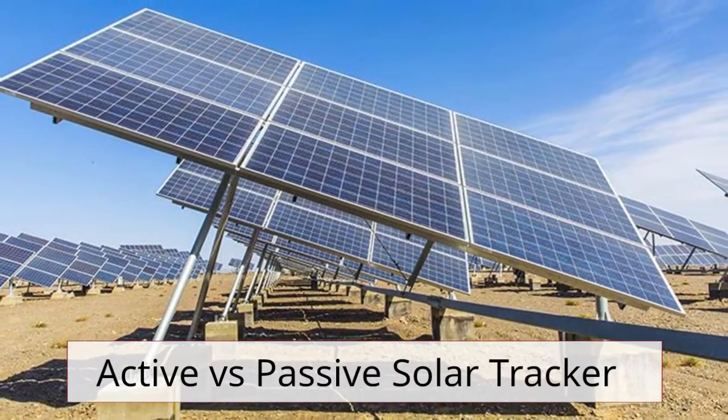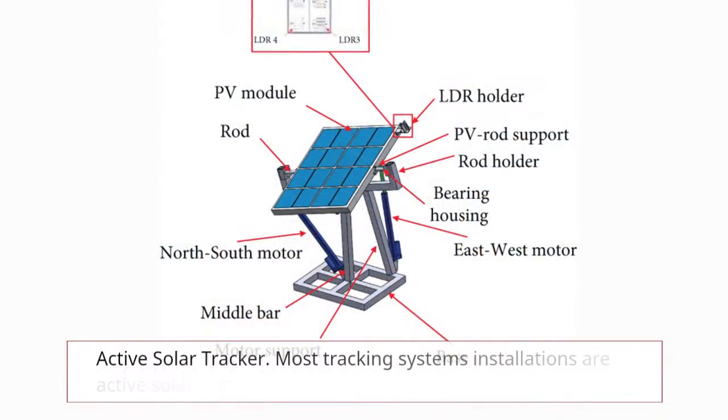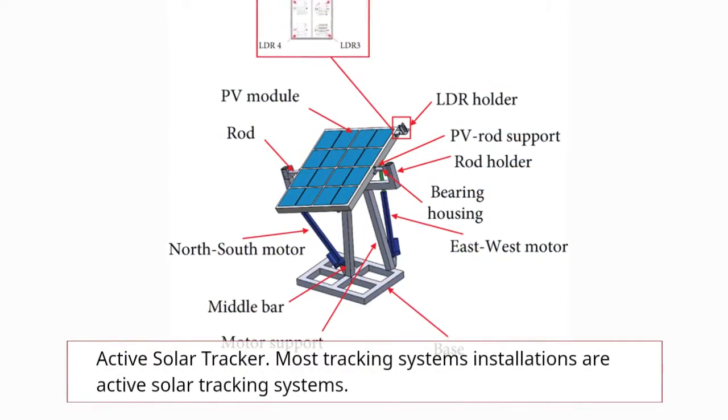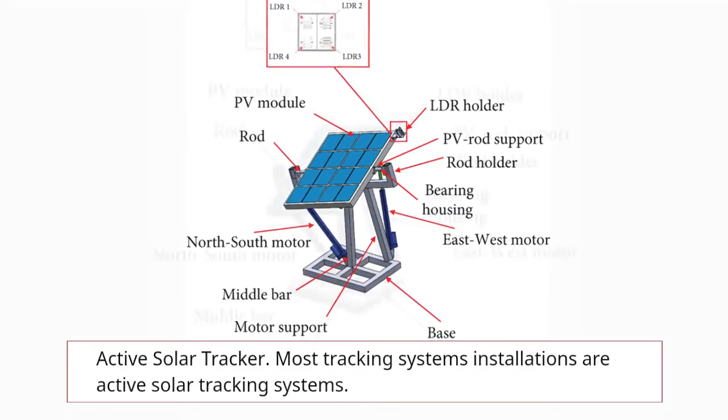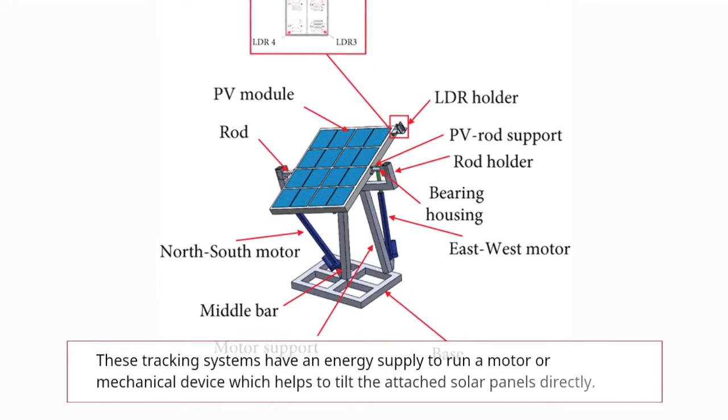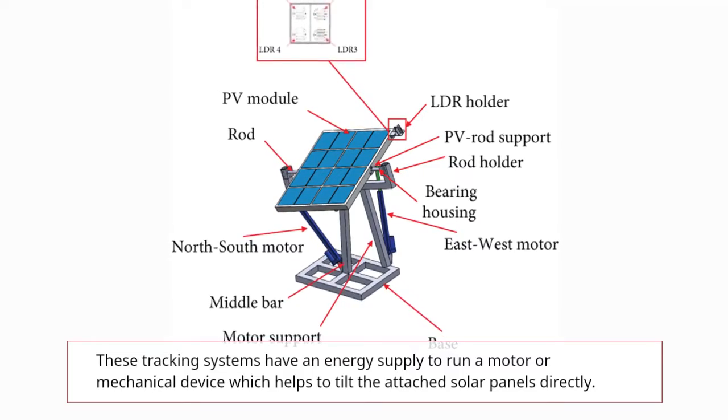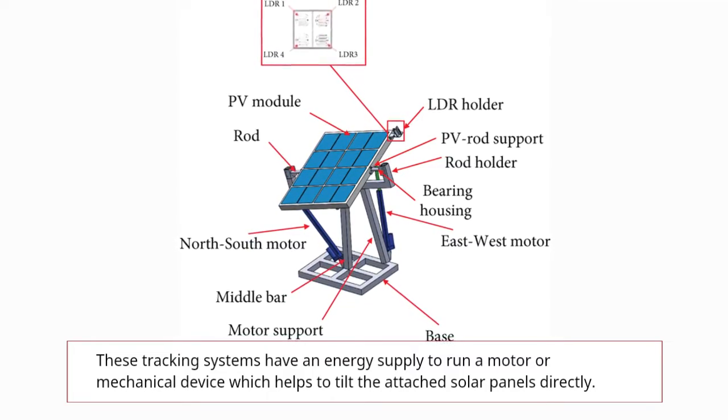Active versus passive solar trackers. Most of these tracking system installations are usually active solar tracking systems. These tracking systems have an energy supply to run a motor or mechanical device which helps to tilt the attached solar panels directly.